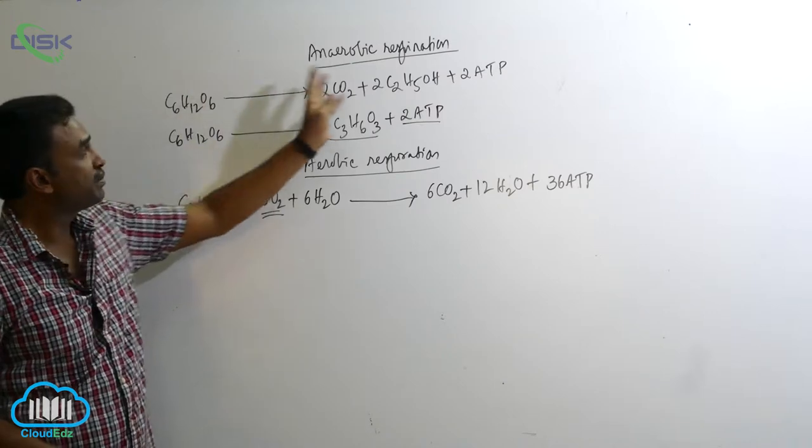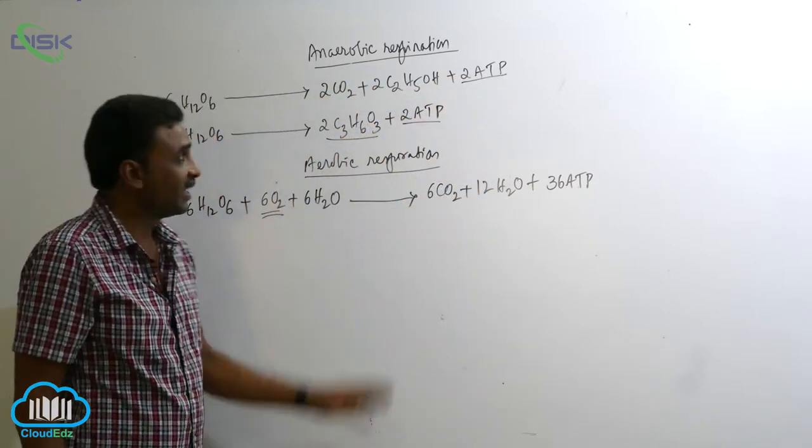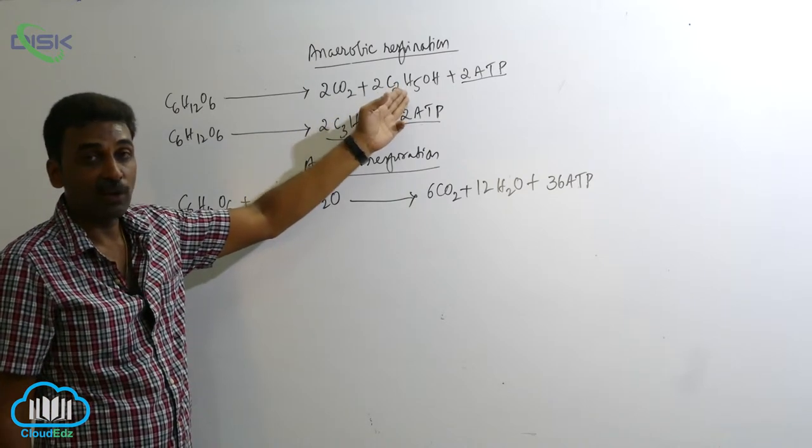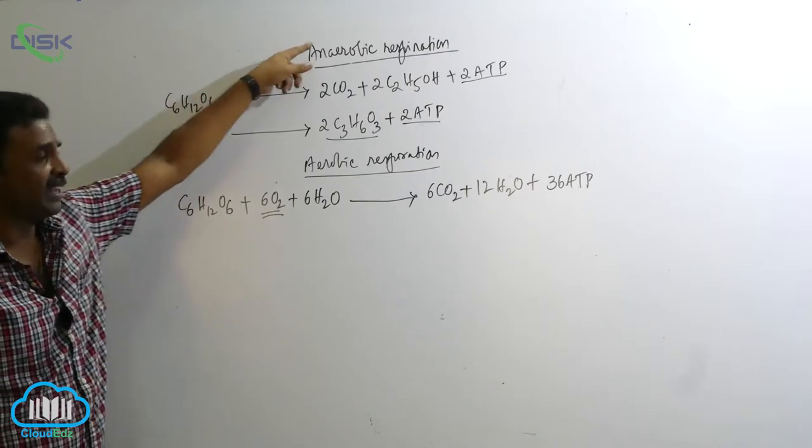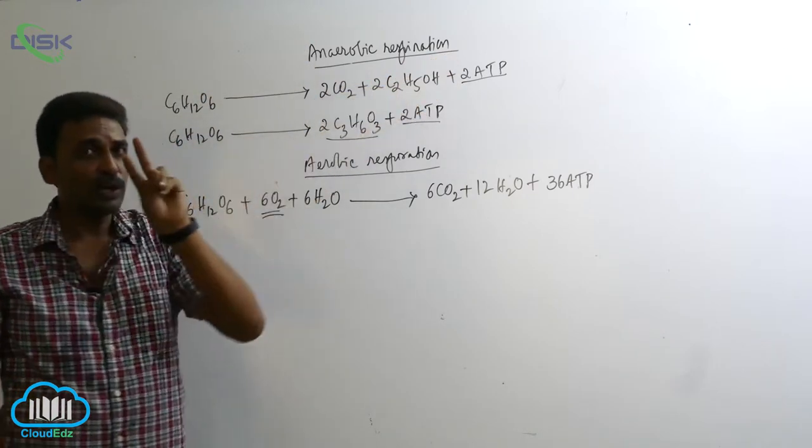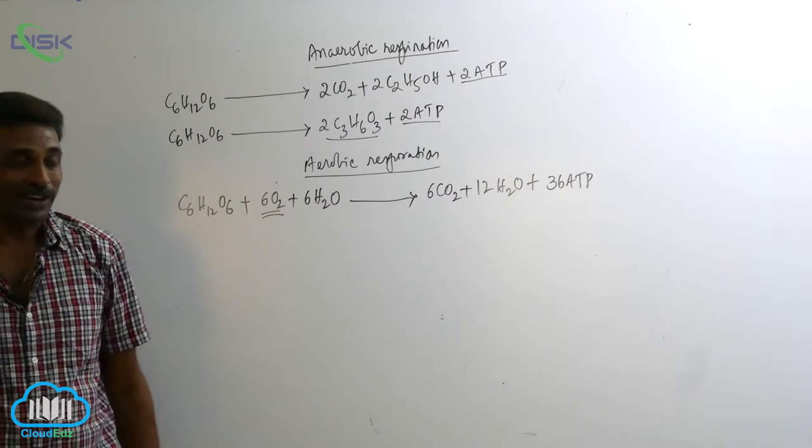So the glucose is broken down to produce energy, again a small quantity of energy. In that process carbon dioxide is released and ethanol or ethyl alcohol is produced. In any case, in anaerobic respiration there are only 2 ATP molecules synthesized when a glucose is broken down.